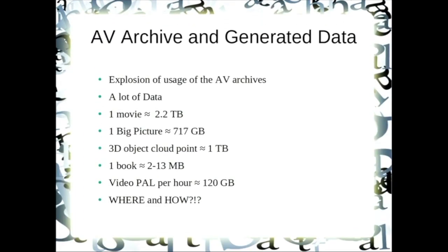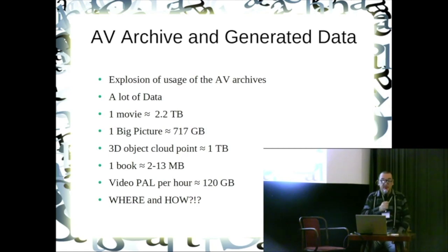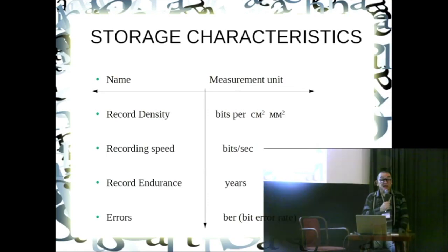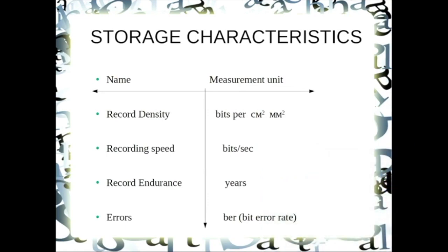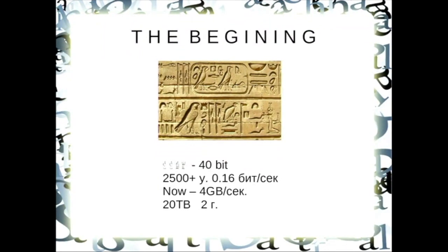I will not insult our audience with details about how important audio-visual archiving is and how much data it generates, so we will skip this slide. We are only talking about the storage and file structure, which is the two sub-problems of the main problem of very long-term preservation. And we begin with the storage characteristics. You see the record density, record speed, record endurance and errors — bit error rates and measurement units. Those units are very connected between them.